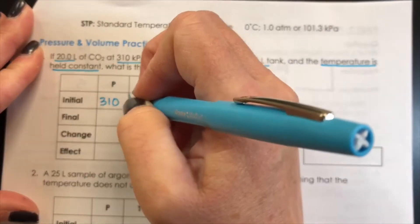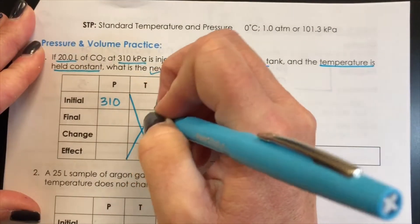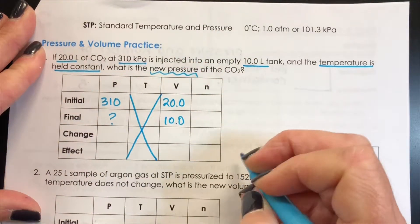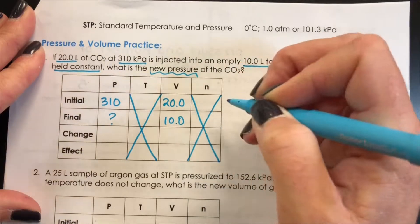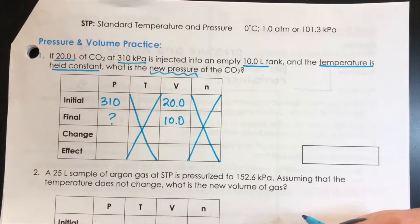They said the temperature stays the same and we're to determine the final pressure of the gas. The number of particles isn't mentioned so we assume that the system was closed and that stayed constant.